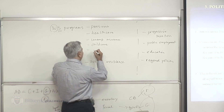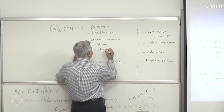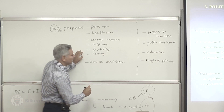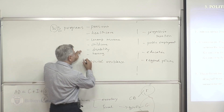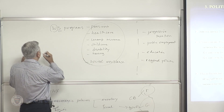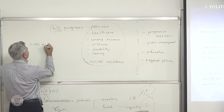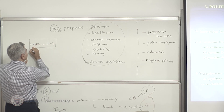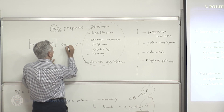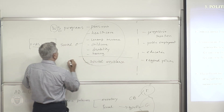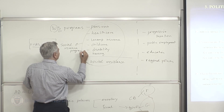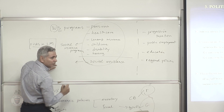Other programs include disability and housing — all of which protect citizens against risks in the labor market. These are called social insurance programs, and some are called social assistance programs.